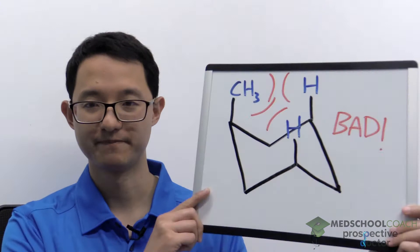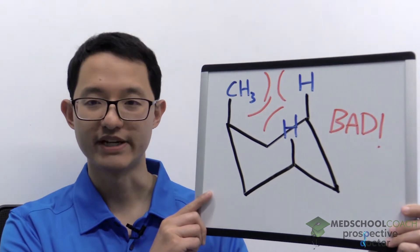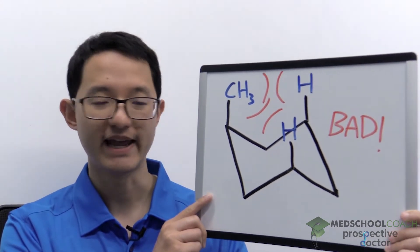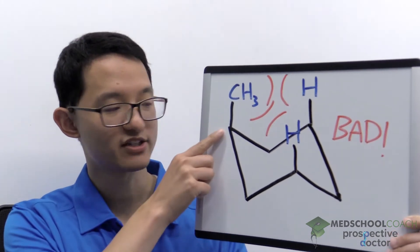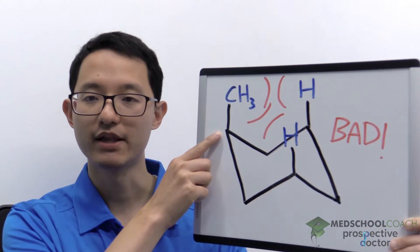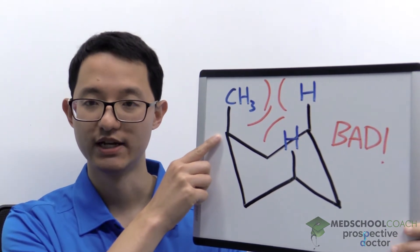To better understand how this works, let's take a look at this board. Here we have a cyclohexane ring, and you can see on this carbon right here, we have a methyl group in the axial position.